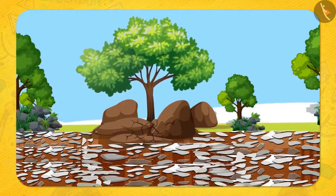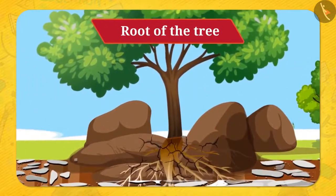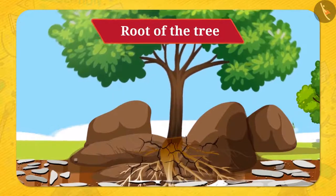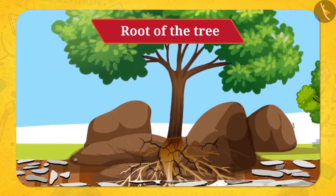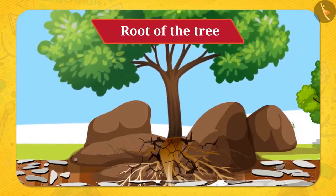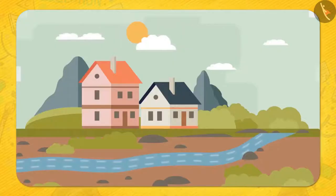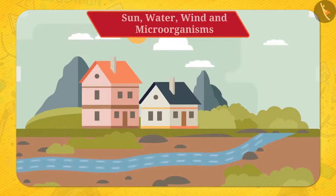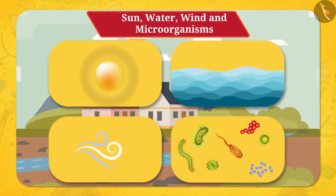If a big tree is growing near a big stone, the root of the tree penetrates inside the crack already present in the stone. As the roots grow, the crack will widen further and eventually the stone will break. In this way, due to the effect of Sun, water, wind, and microorganisms, larger rocks get converted into smaller and smaller parts.